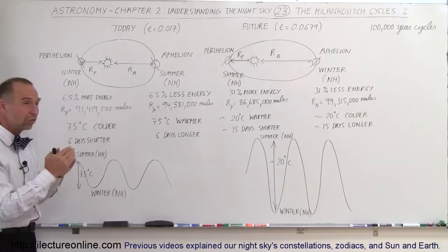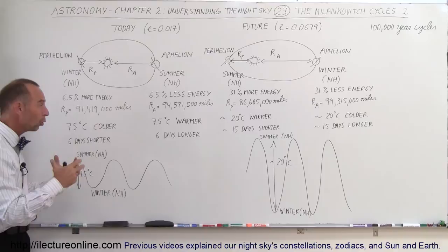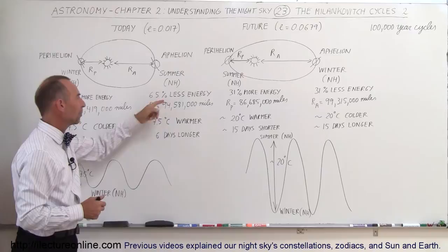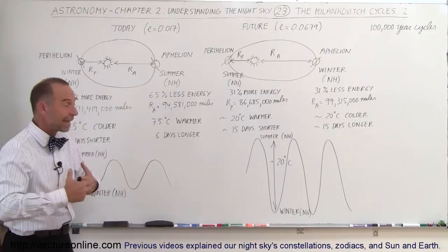We're that much closer to the Sun, we receive 6.5% more energy, yet it's 7.5 degrees Celsius colder on the Earth during our winters. And of course, when we experience summer and we're farther away from the Sun, we receive 6.5% less energy, yet it's 7.5 degrees Celsius warmer.